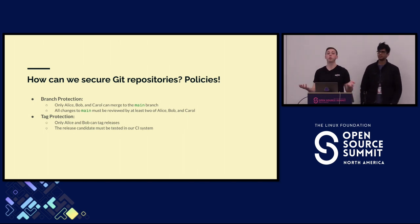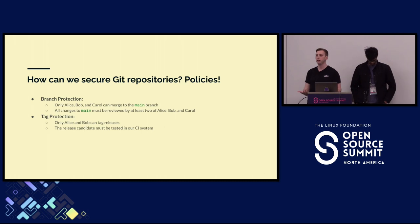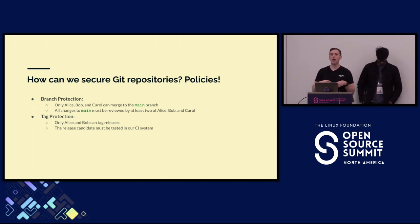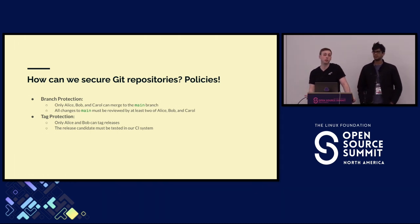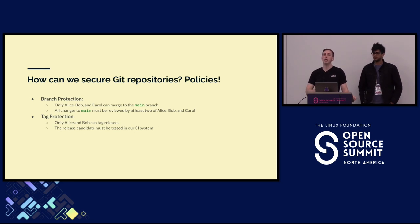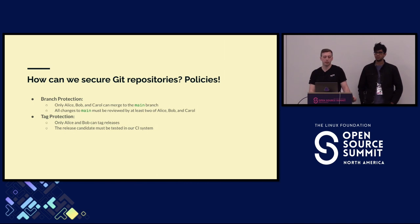We might also want similar policies for tags. Branches and tags are both refs within Git, but tags might correspond to releases that people are more likely to consume. So for merging into main, you might say this needs to be signed off by someone on a developer team. But for a tag, you might have additional policies that say this needs to be signed by your CI pipeline, or signed off by someone on the release team, an SRE team, something like that. We might end up having different policies for different situations.